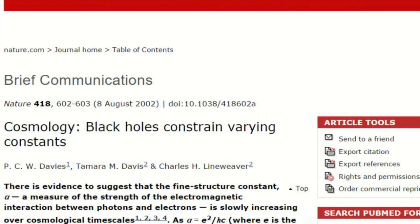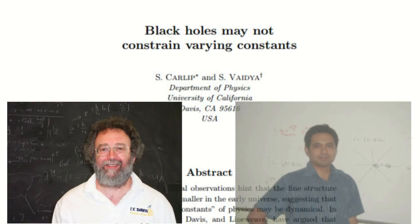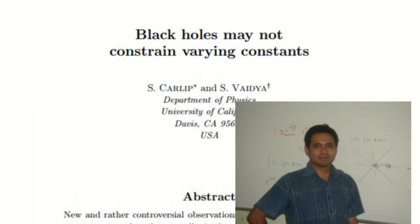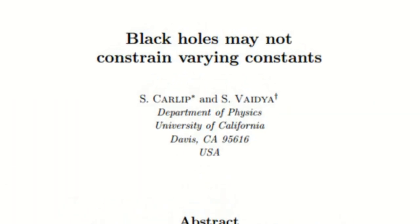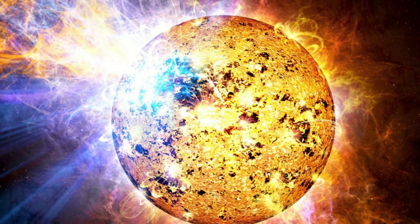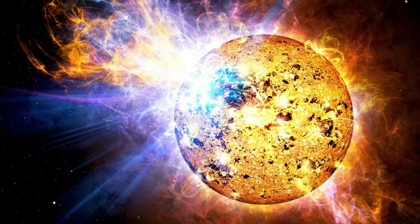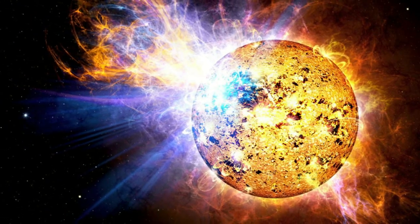Just one month after Davies, Davis, and Lineweaver's paper appeared in Nature, Steve Carlip and Sachin de Oveja published their refutation also in Nature. This paper pointed out the fatal flaw in the previous paper in that it neglected the fact that thermodynamics is consistent with an increase in alpha whether it comes from a decrease in C, an increase in E, or a combination of the two.